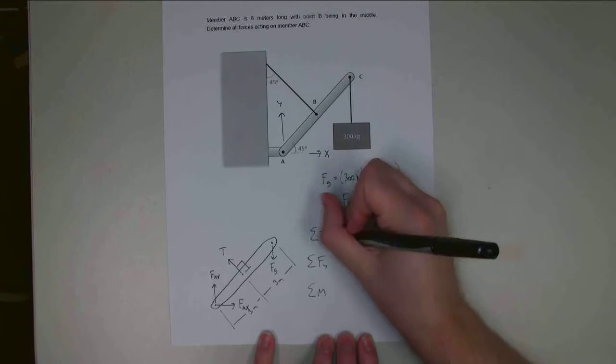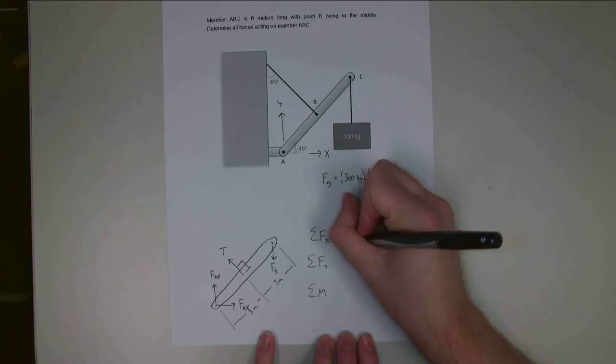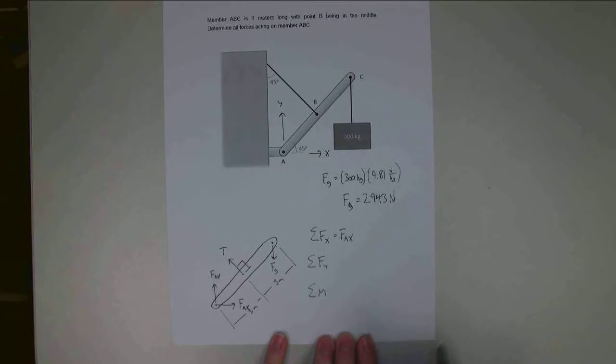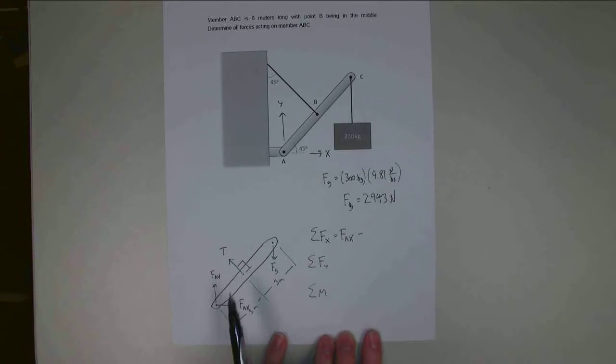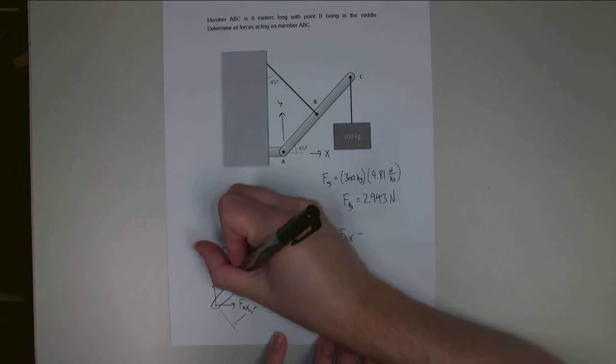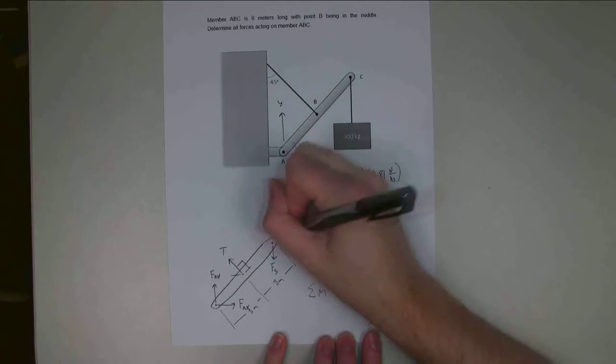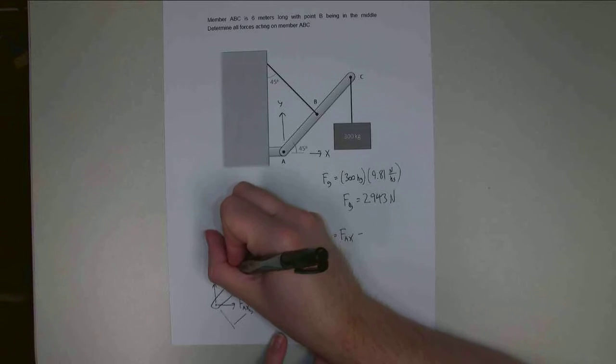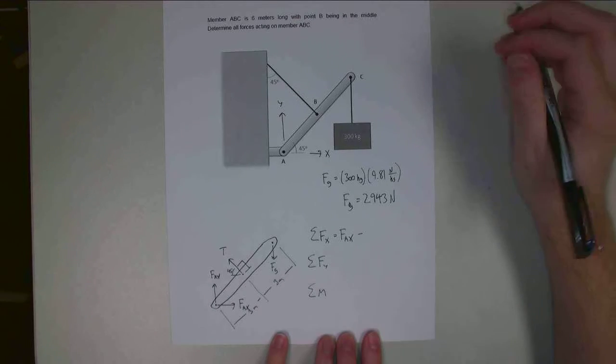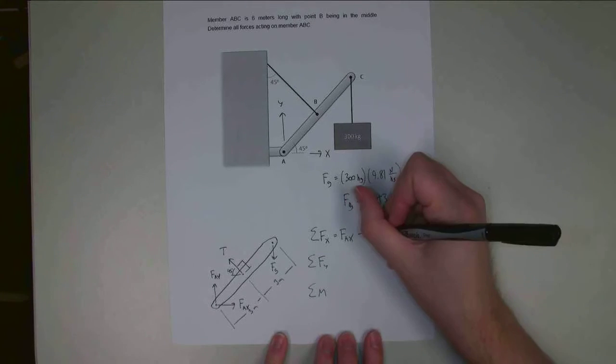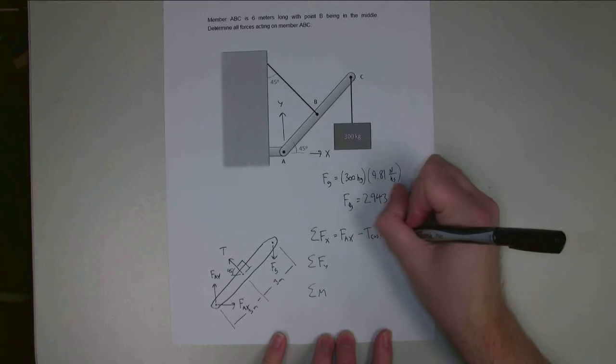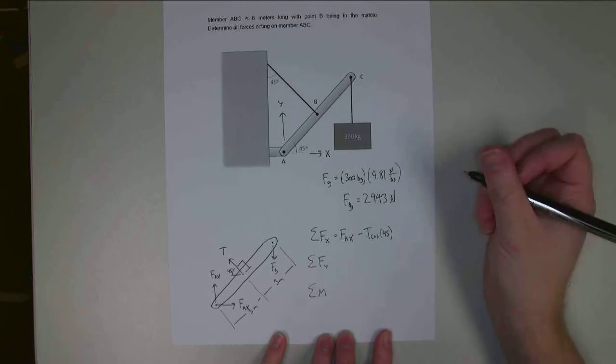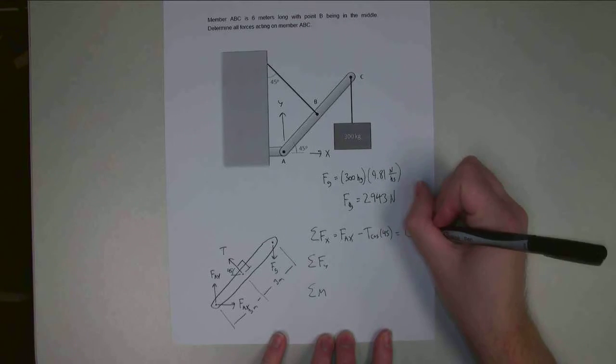In the X direction, I have FAX, that's just directly in the X direction, and I'm going to have the negative X component of my tension. This is 90 degrees from the beam itself and 45 degrees from horizontal. So this is going to be minus T cosine 45, and that's all my X components. So that's equal to zero.